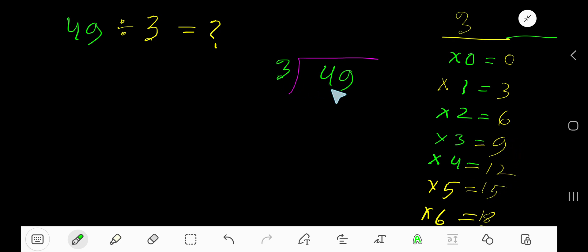15. 3 goes into 4, how many times? 2 times 6, which is greater, so 1 time. 1 times 3, 3. Subtract 1, bring down this digit.